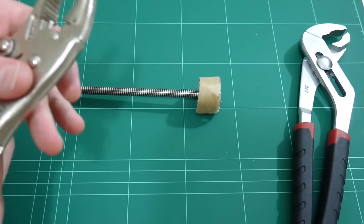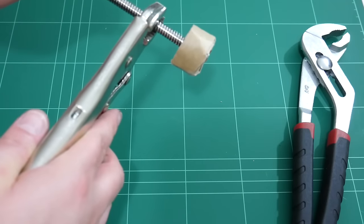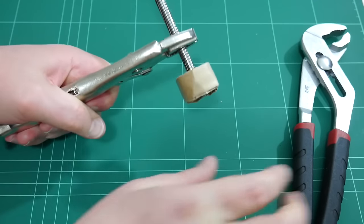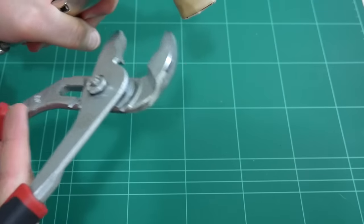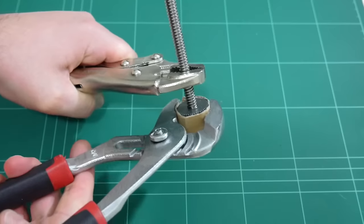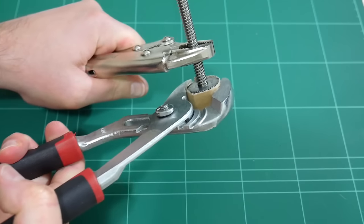So grab your multi-grips, get a nice strong grip around the lead screw. Use your multi-grips and attach around the rotor. And then give it a twist.